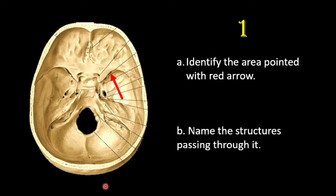The first question has two parts: (a) identify the area pointed with the red arrow, and (b) name the structures passing through it. The area pointed with the red arrow is the superior orbital fissure. You can see this fissure is an oblique-shaped cleft or a rod-shaped fissure.